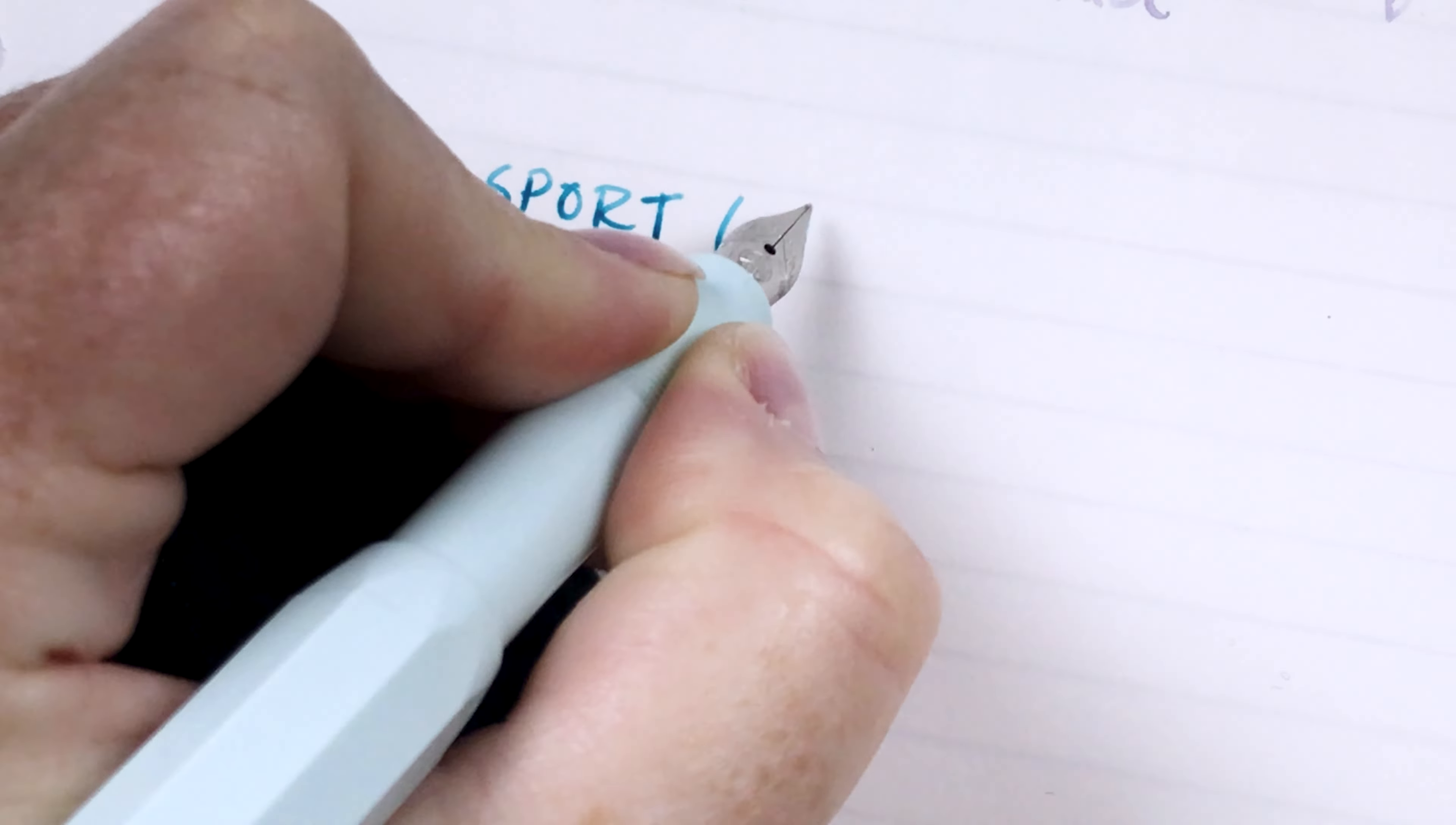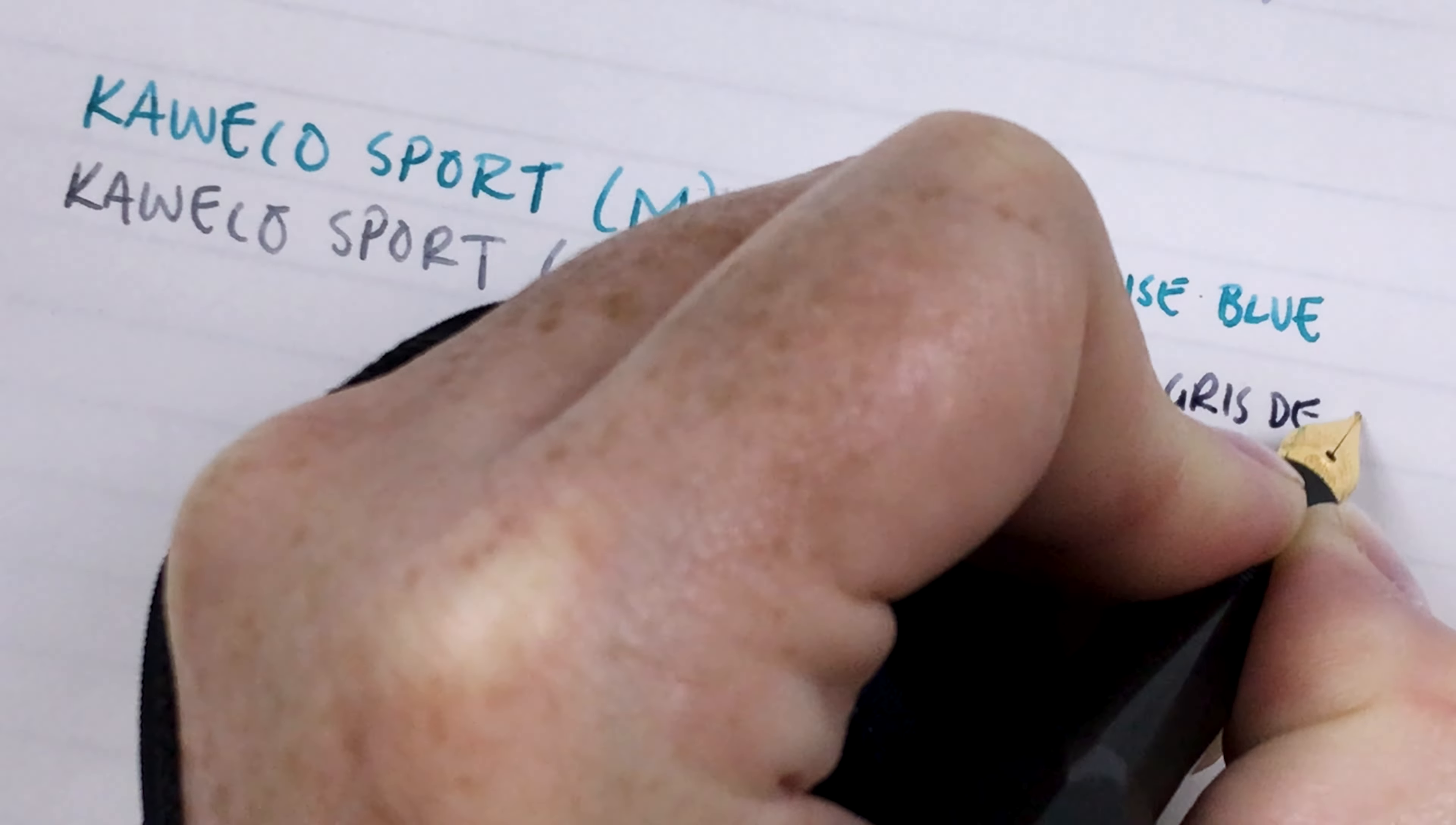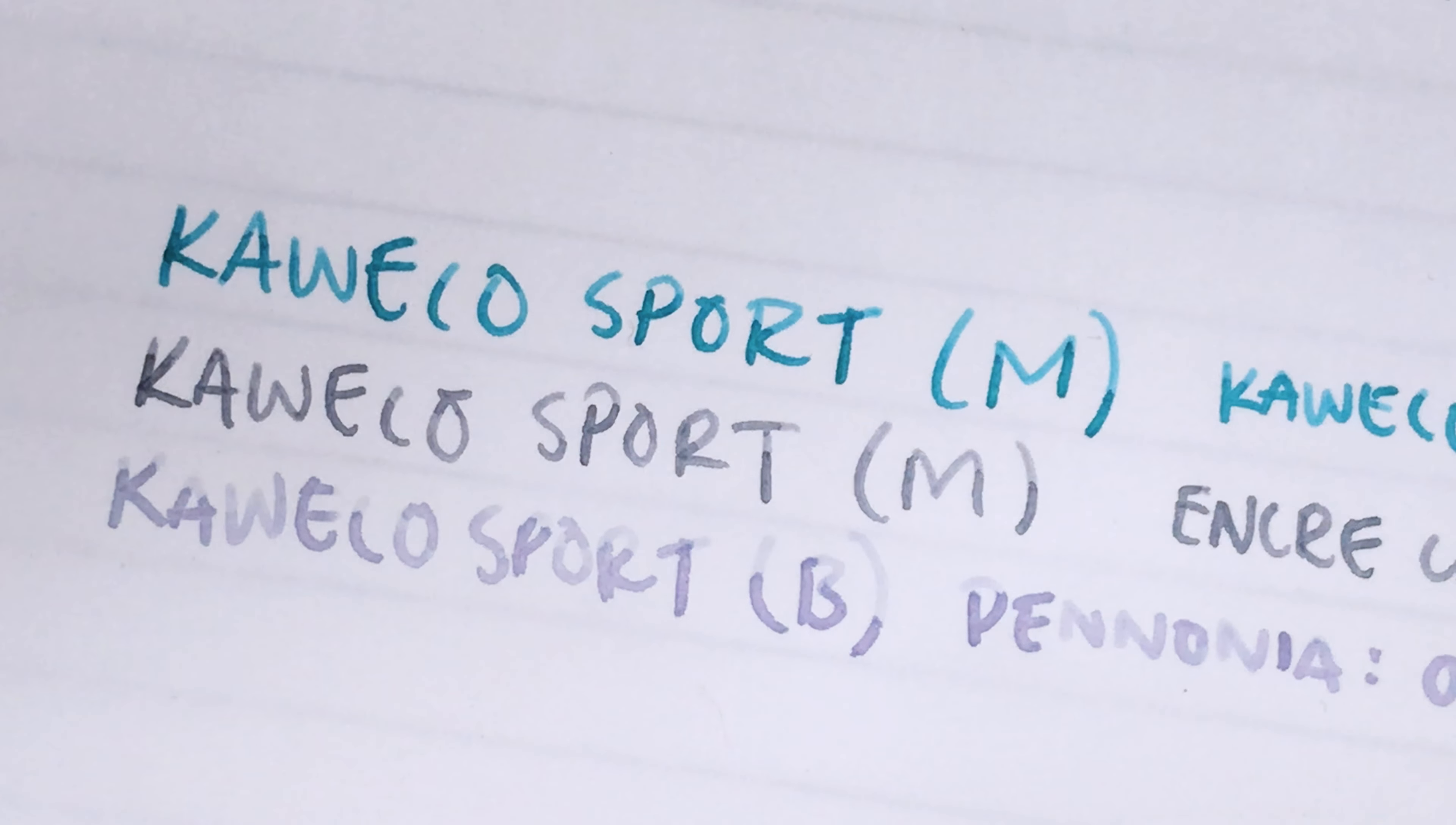So I thought I would just show you an example of my other two Kaweco Sports here. They're both medium nibs and they write very similar to each other. It does depend on the ink and how wet it is whether you get a thicker line or not but you can see that this broad is much thicker than the medium. So just if you're interested in getting one of these different nibs, that's what the medium looks like and that's what the broad looks like.